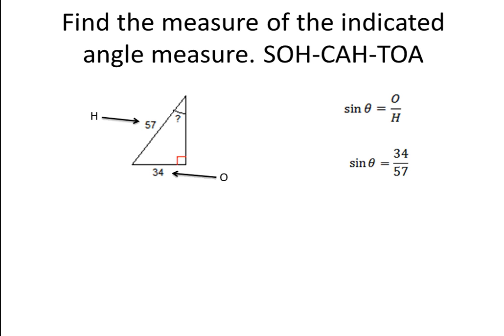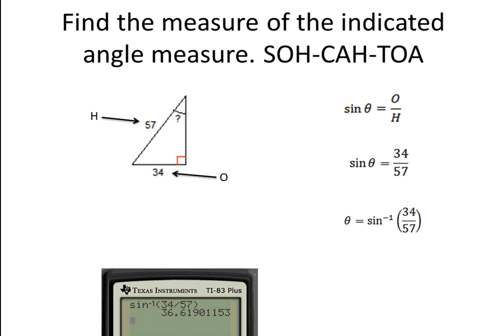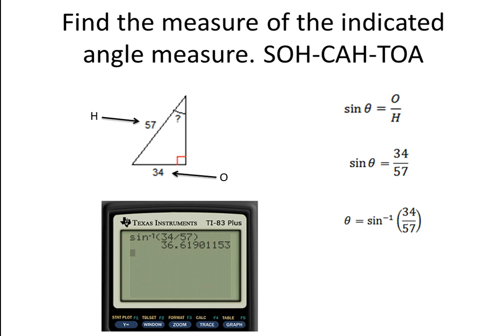This should look familiar — we've been doing this for a couple of days with our trig ratios. Now, to solve for theta, we have to use the inverse sine and substitute in the ratio 34 over 57. So we input inverse sine of 34 over 57 into our calculator, and our answer is 36.619 degrees. Make sure you include the degree symbol — that is our unit.